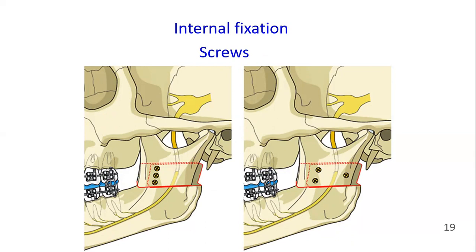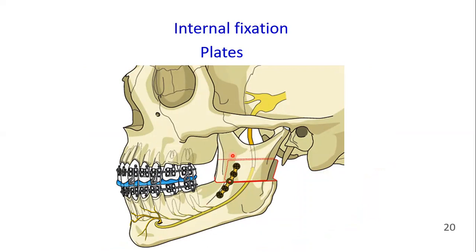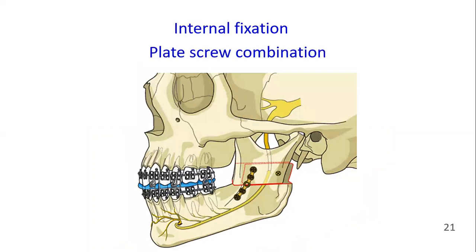Two possible patterns of screw placement are demonstrated here. A plate can be applied across the segment on the lateral aspect of the mandible using monocortical screws; a minimum of two screws on each side of the osteotomy is necessary. Avoid placing the plate and screws close to the alveolar canal to avoid damage to the inferior alveolar nerve. A combination of a single plate and a position screw (anti-rotation screw) is also possible, which improves stability against rotational forces.